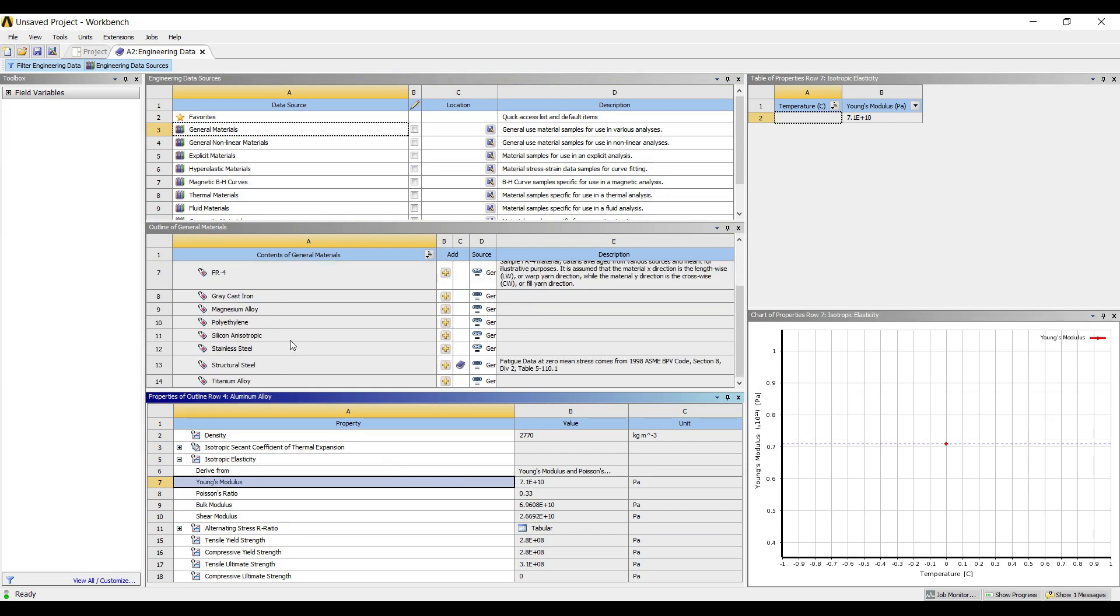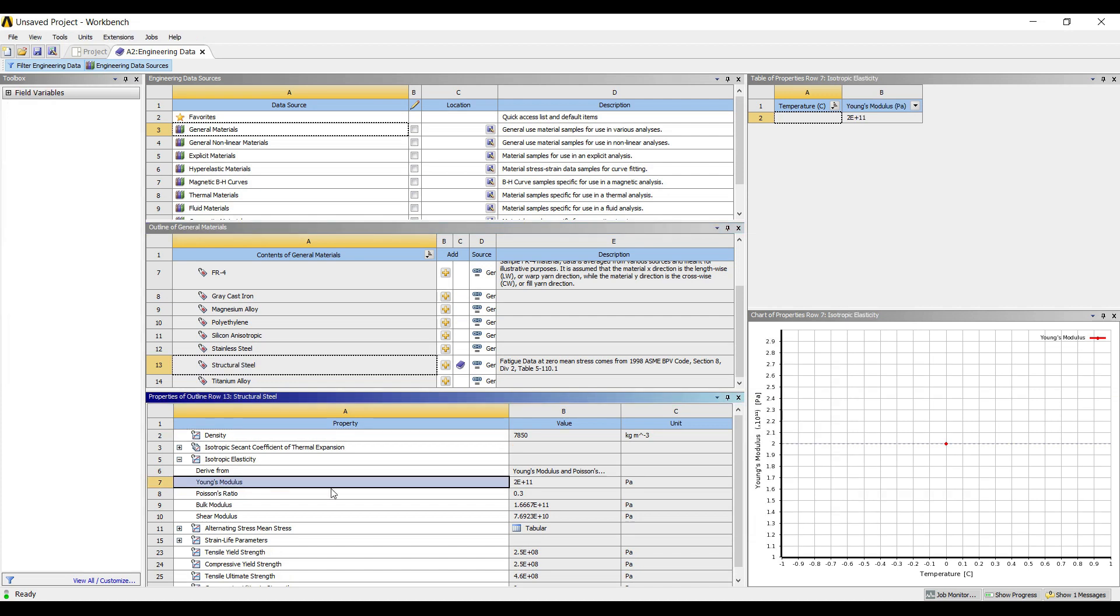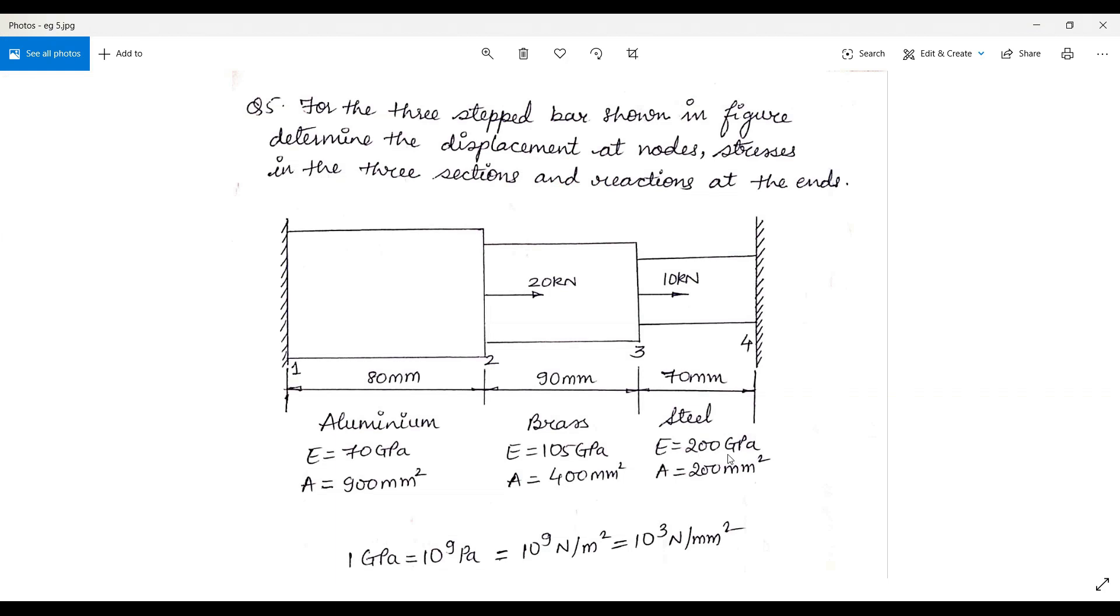Structural steel is something which is already selected. For steel, Young's modulus is 2 into 10 raise to 11, and what is given to me is 200 gigapascal, so it is fairly correct. I may choose aluminum, or I may create a new material and write the Young's modulus as 70 gigapascal.